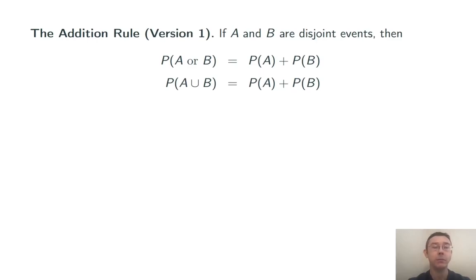The probability of A union B equals the probability of A plus the probability of B. So A union B is just the set of all things that are in A or in B. So it really does just mean A or B.